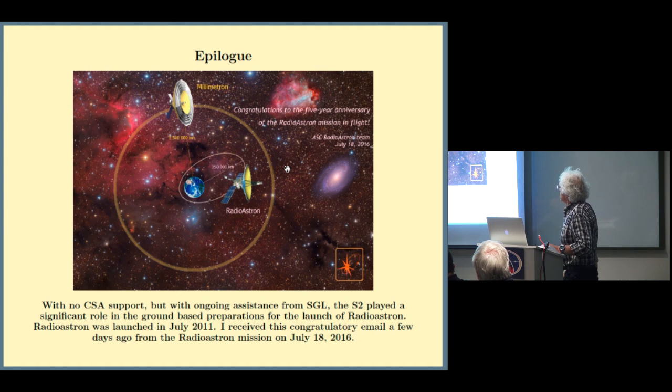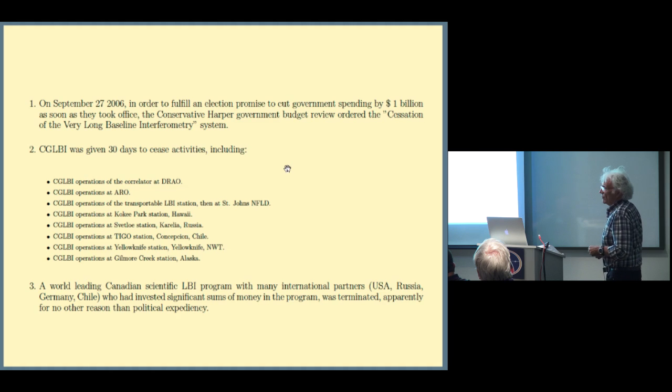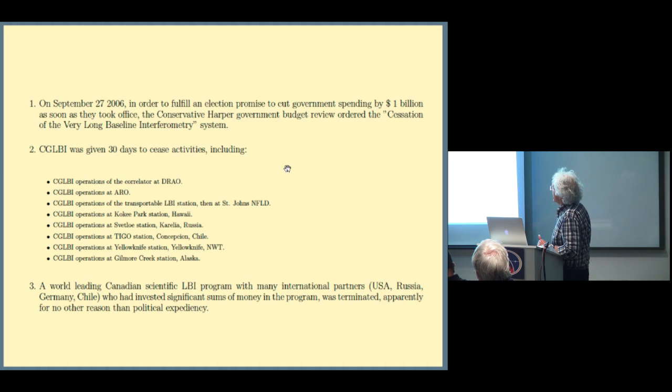Radio Astron was eventually launched in July. I got this congratulatory email a few days ago from Kardashev's group. On September 27th, in order to fulfill an election promise to cut $1 billion as soon as they took office, the Conservative government ordered the cessation of the very long baseline interferometry system in Canada. They were given 30 days to shut down. DRAO Correlator, ARO, the transportable was out in Newfoundland doing sea level change experiments. Our international partners who had invested time and money closed it all down. This was a shameful move on behalf of the powers that be in the Canadian government. A world-leading Canadian scientific LBI program with many national partners - USA, Russia, Germany, and Chile - who had invested money in the program was terminated, apparently for no other reason than political expediency.